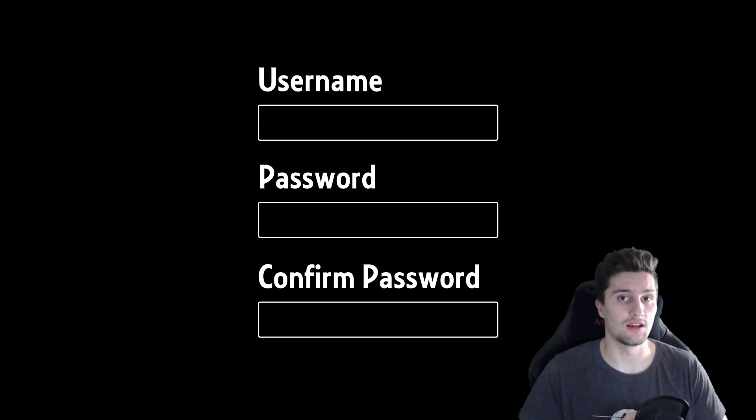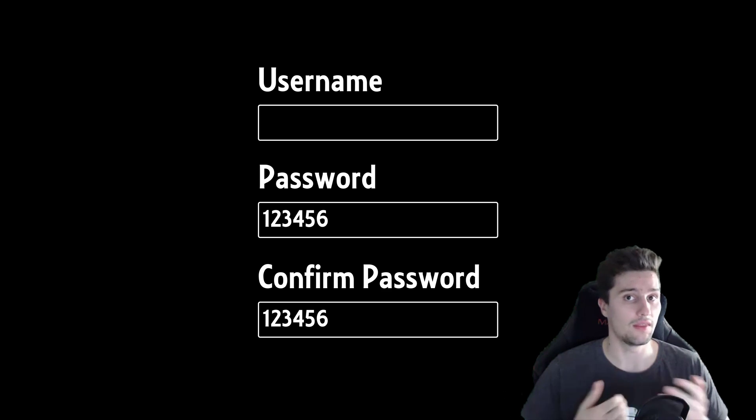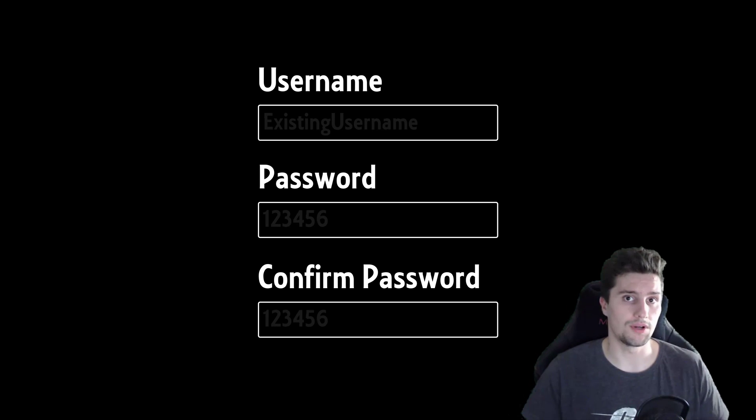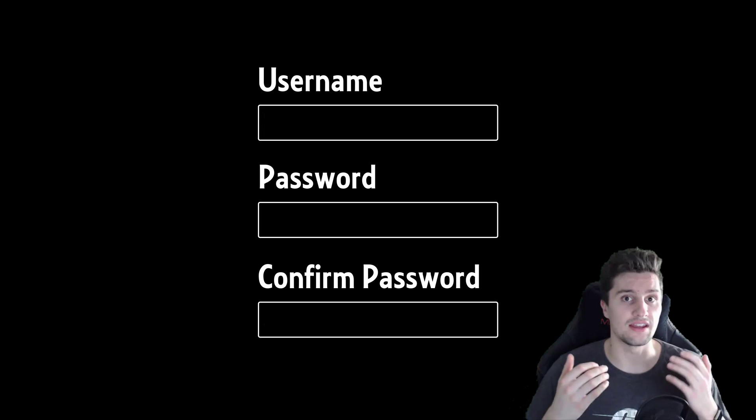Another equivalent class would be if we would leave our username field empty and submit the form. Then this of course should lead to an error response, but we should test that because that is not covered in our first test case if we enter a valid username. Another equivalent class would be if we enter a username that already exists. Or another equivalent class would be if we incorrectly confirm the password, so we write something else in the confirm password field than in the password field. So I hope and think you get it—we just want to cover all of our code paths with as little test cases as possible, because that's what makes good testing possible in the end.